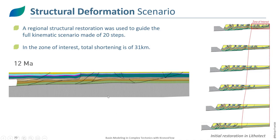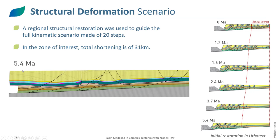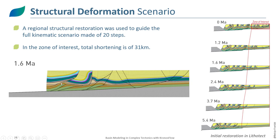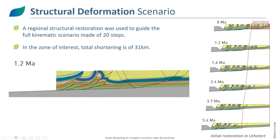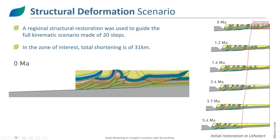Here is the main restoration. We start within a foreland basin where everything is relatively flat, and then at 12 million years compression begins, with each thrust moving one by one, resulting in a total shortening of 31 kilometers.